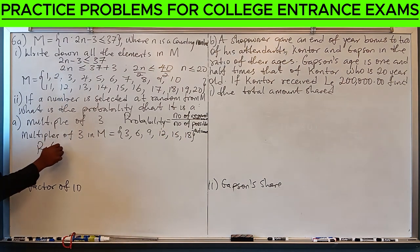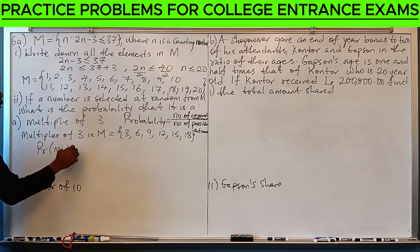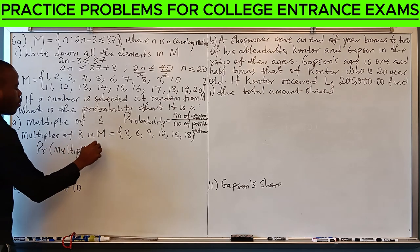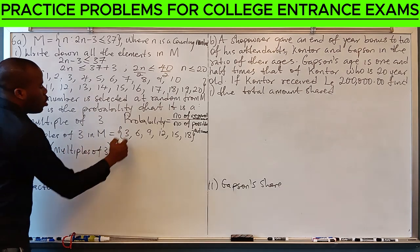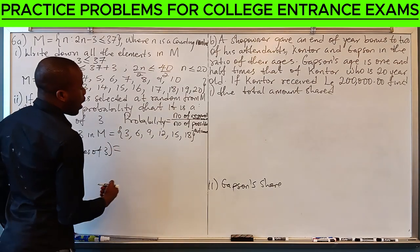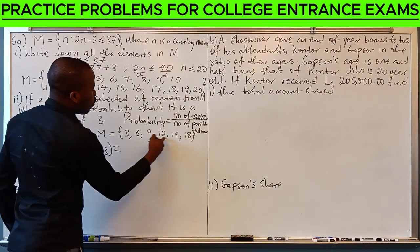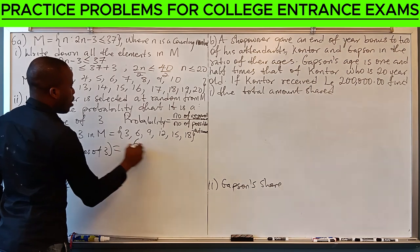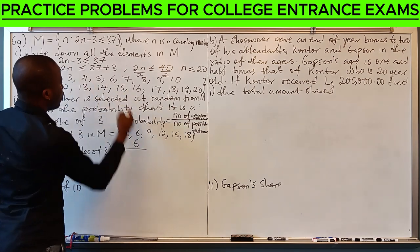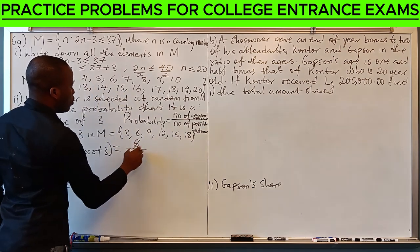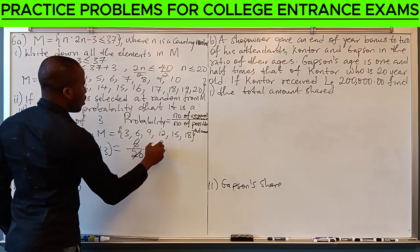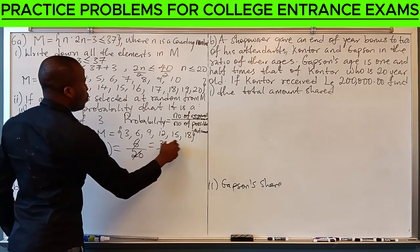Probability of multiple of 3 will be number of required outcome is 6, and number of possible outcome is 20. This is 3 over 10, which is 0.3.